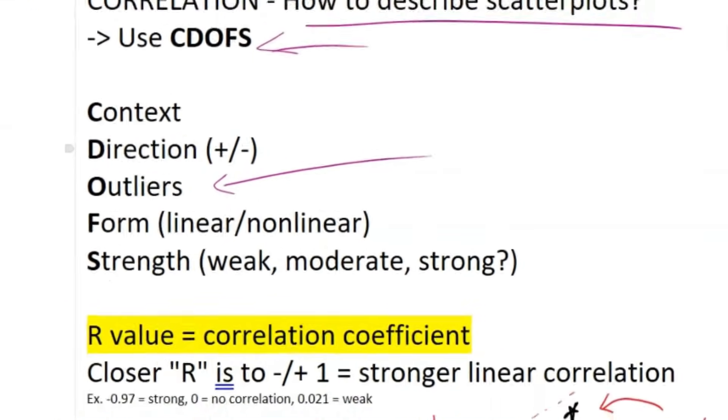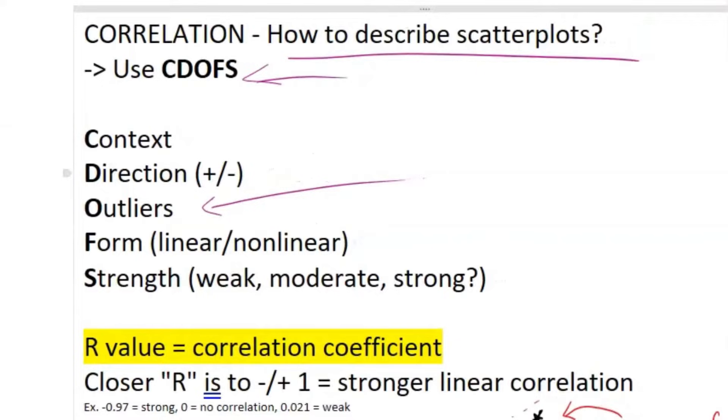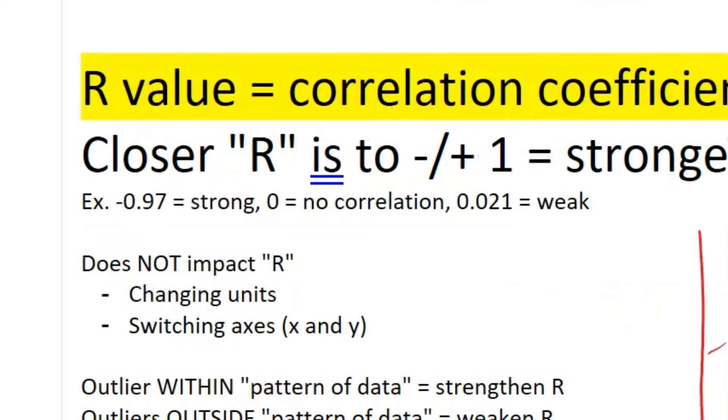Now tying directly into correlation and describing scatterplots is your R value. Super important. Your R value is your correlation coefficient, and it can range from negative one to one. The closer it is to negative one or one, the stronger linear correlation it has. So something like negative one is a perfect negative linear correlation. Positive one would be a perfect positive linear correlation. Here's some more examples. Negative 0.97 would be considered a strong linear correlation. Zero would be no correlation, and something like 0.021 would be a weak linear correlation.